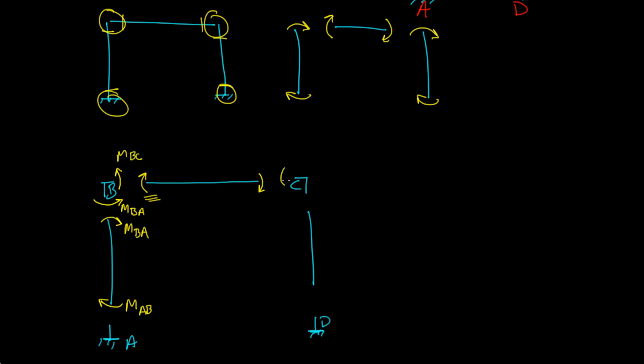Same thing for C. This is going clockwise. This is going to go counterclockwise. On member CD, this is clockwise. So you have equal and opposite. That's going clockwise. That means this is going to go counterclockwise. And this is M, both of these are M_CD, the moment at CD.